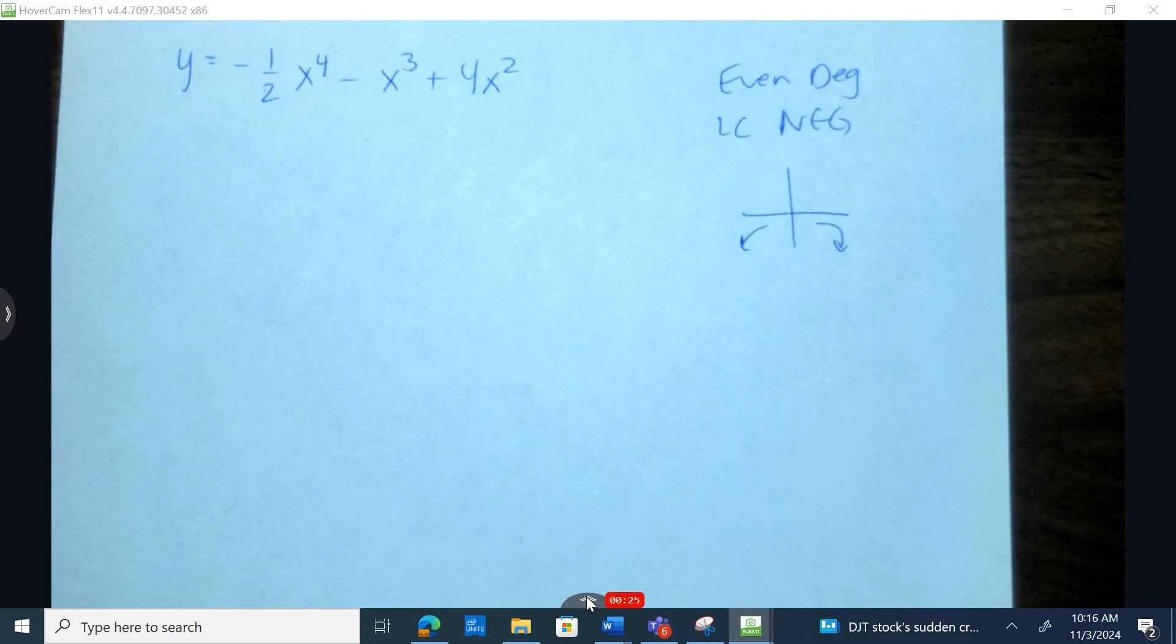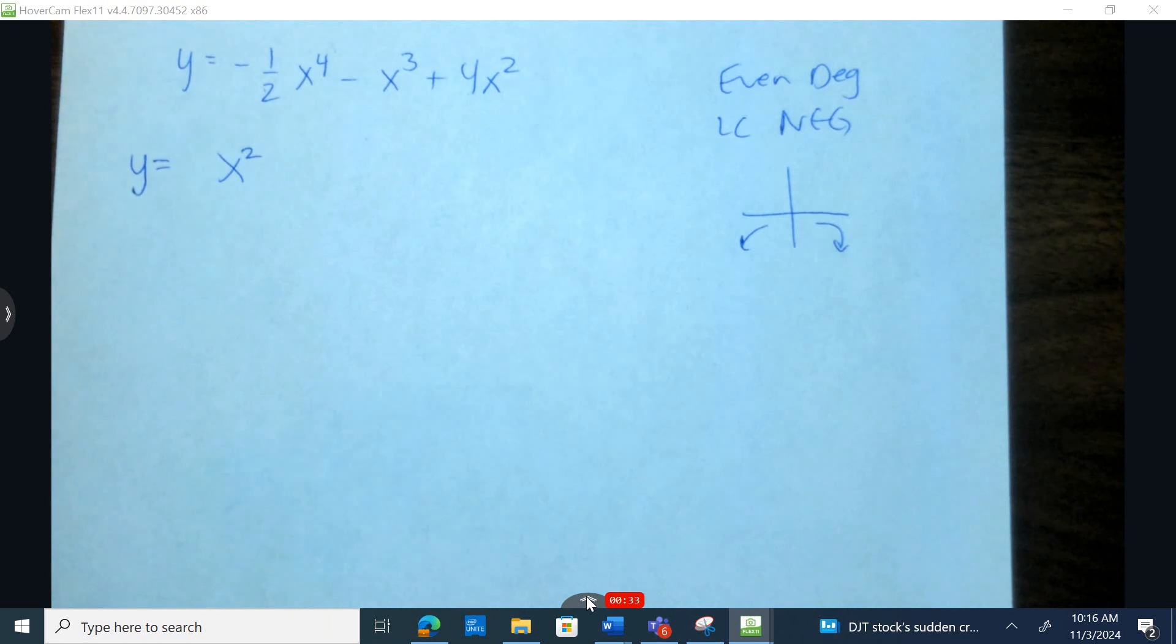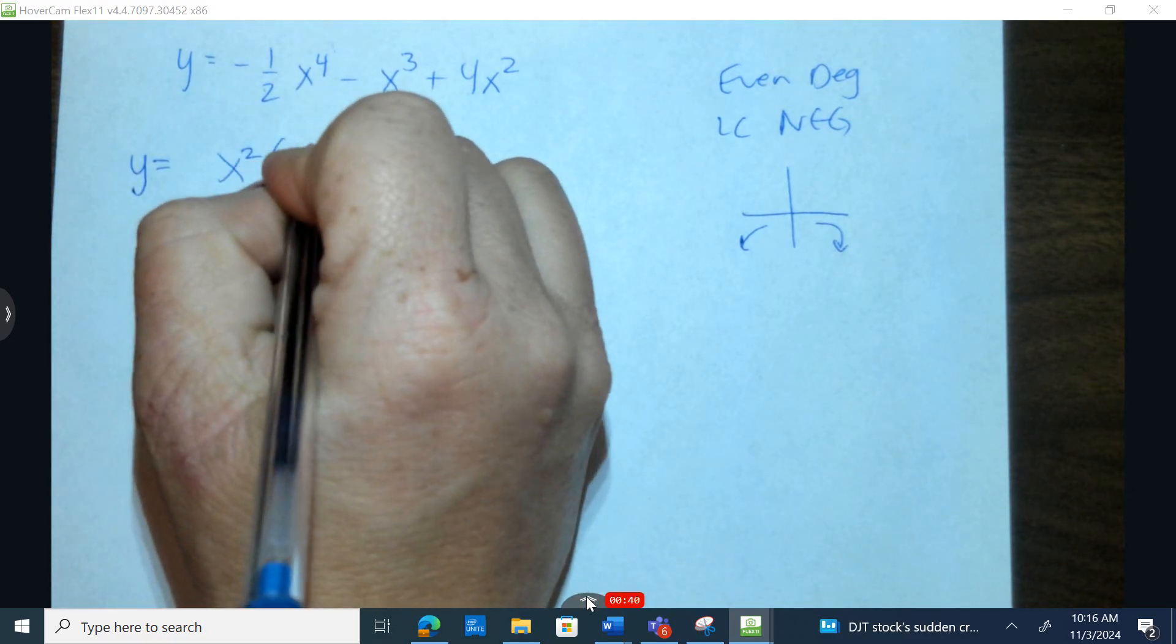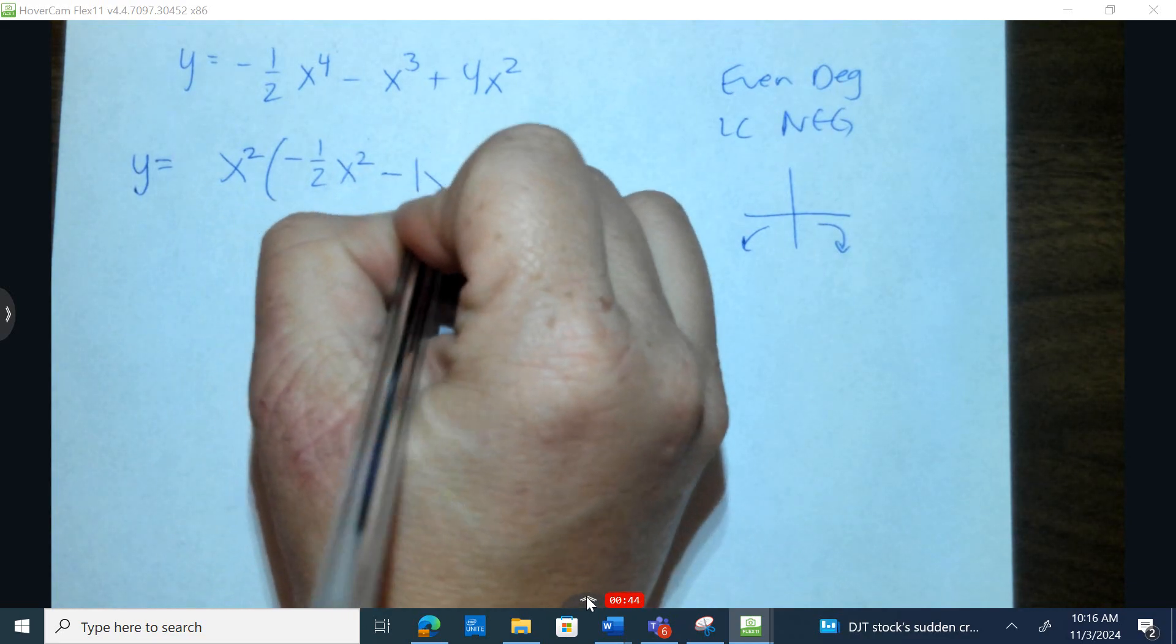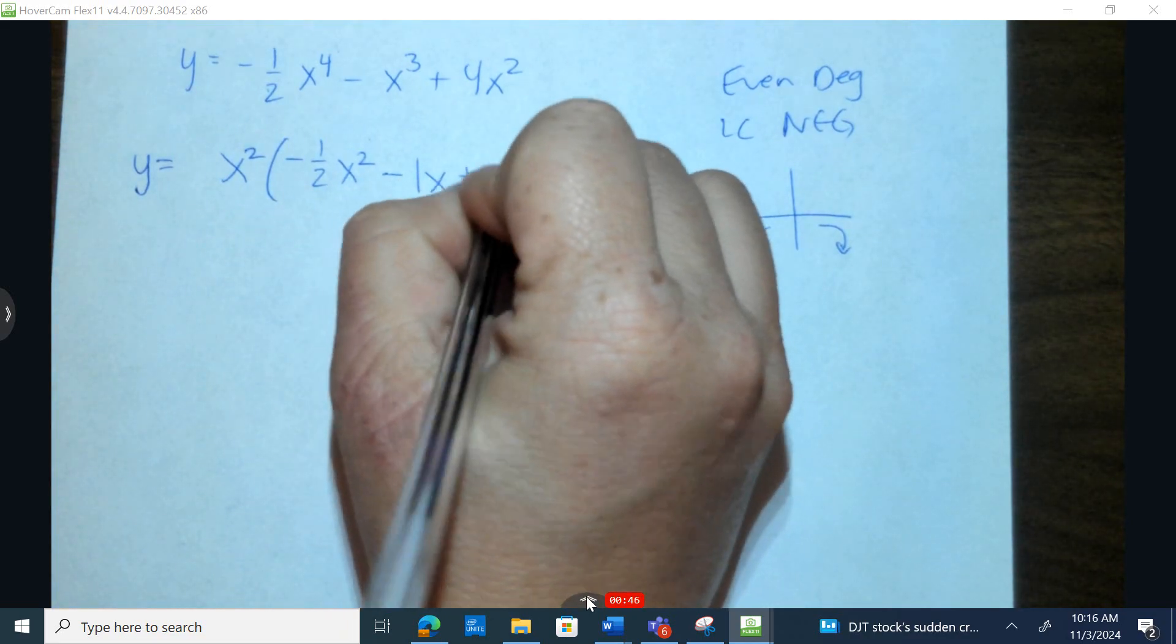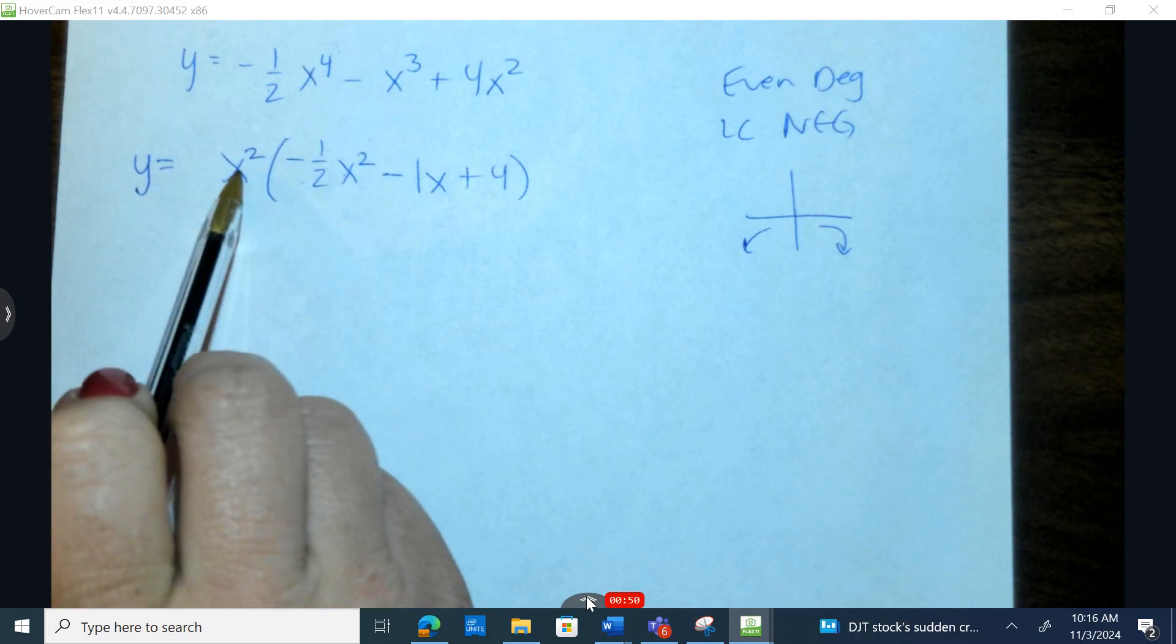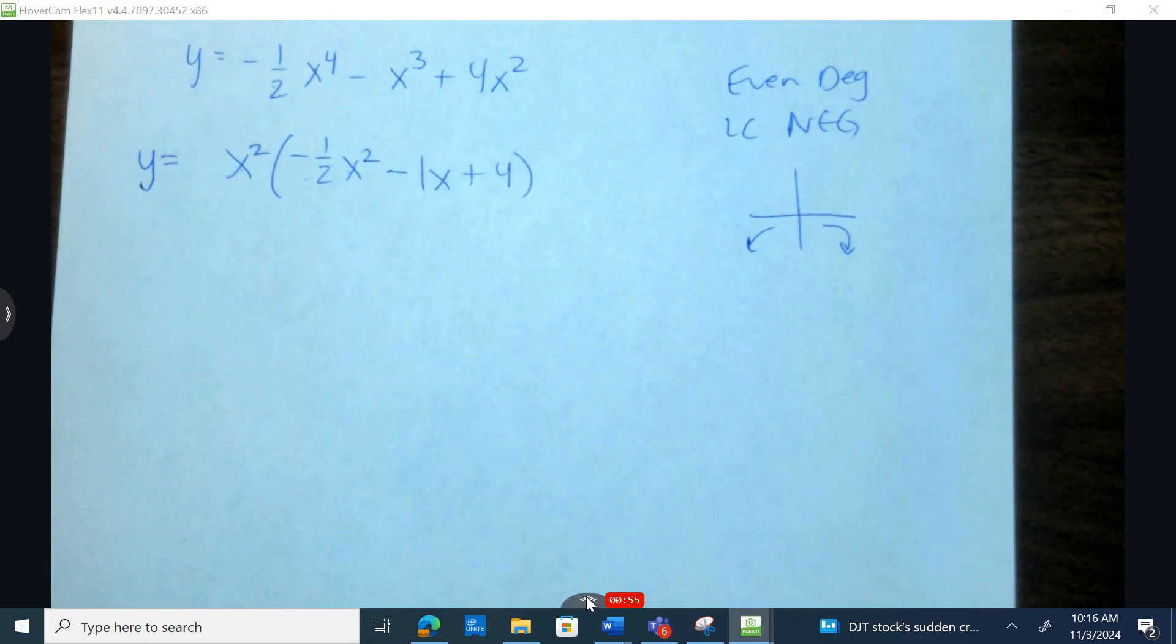I'm gonna factor out, look in here and say what's gonna be the best. I know I want to factor out an x squared, and I think that I'll take just an x squared to start with. Let's go with negative 1/2 x squared minus 1x plus 4. Let's make sure this is correct: x to the fourth with a negative 1/2, negative 1x to the third, and positive 4x squared. Okay.